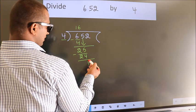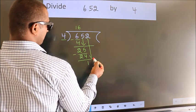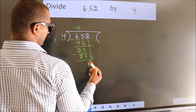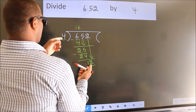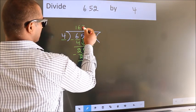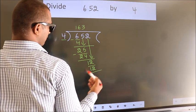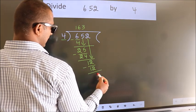After this, bring down the beside number. So 2 down. So 12. When do we get 12 in 4 table? 4 threes, 12. Now we subtract, we get 0.